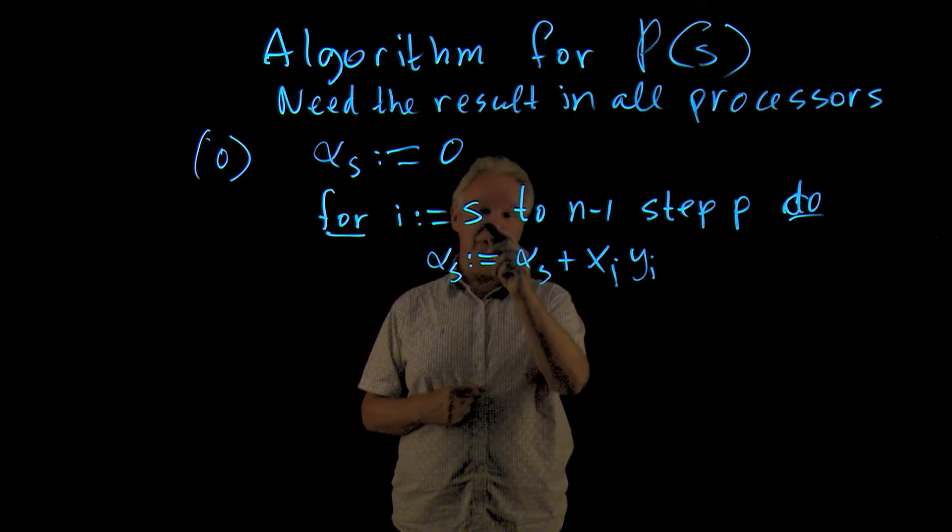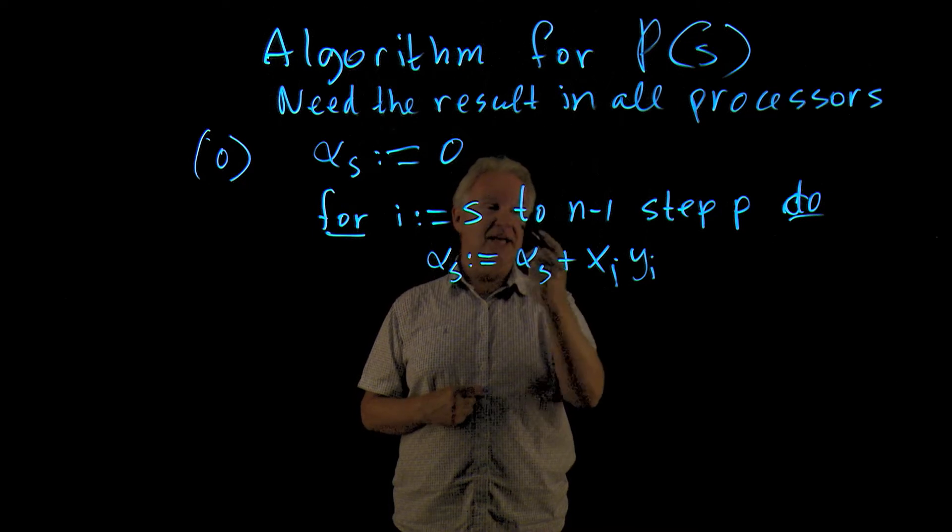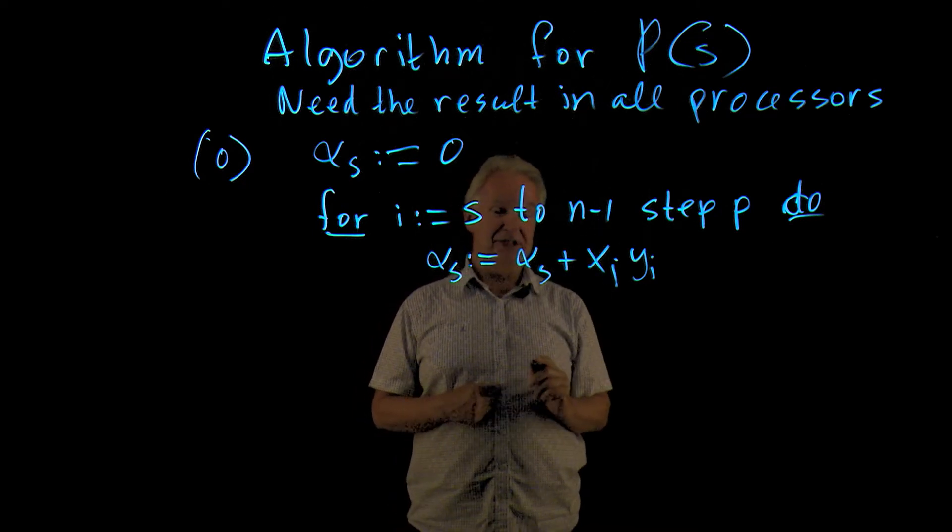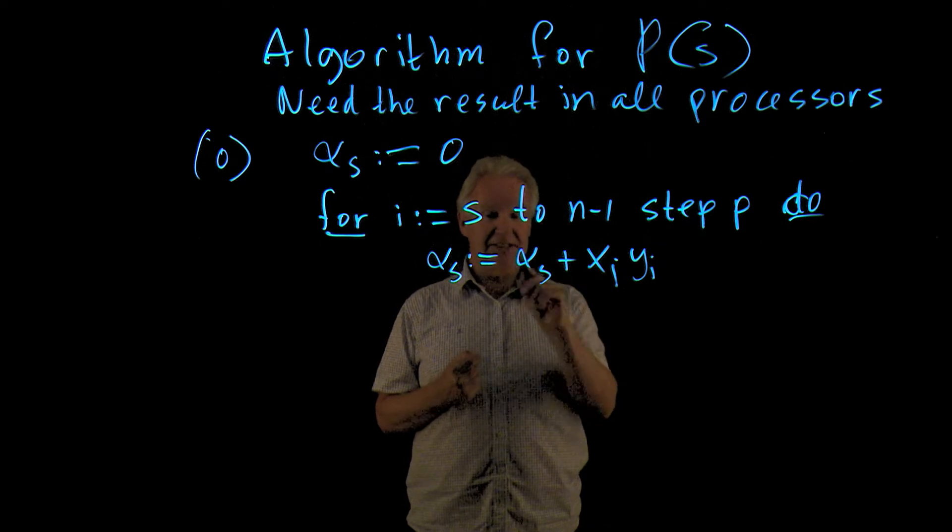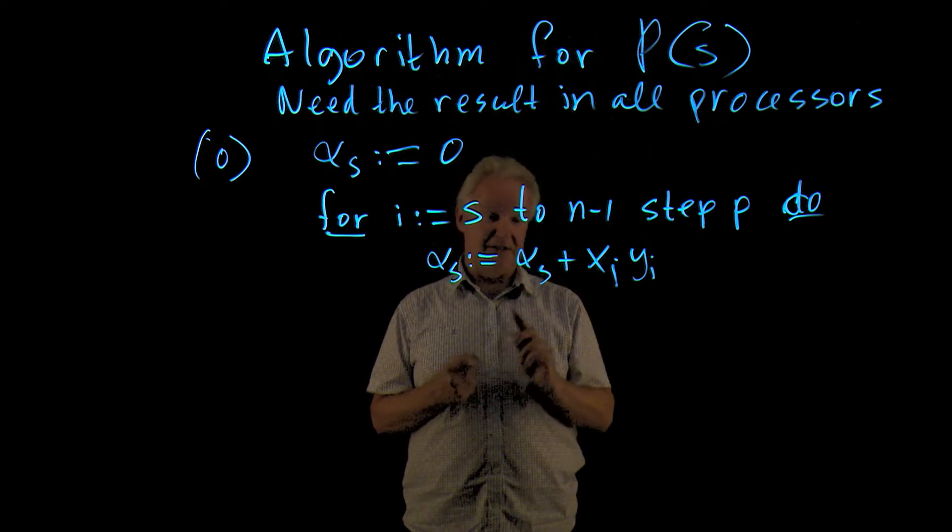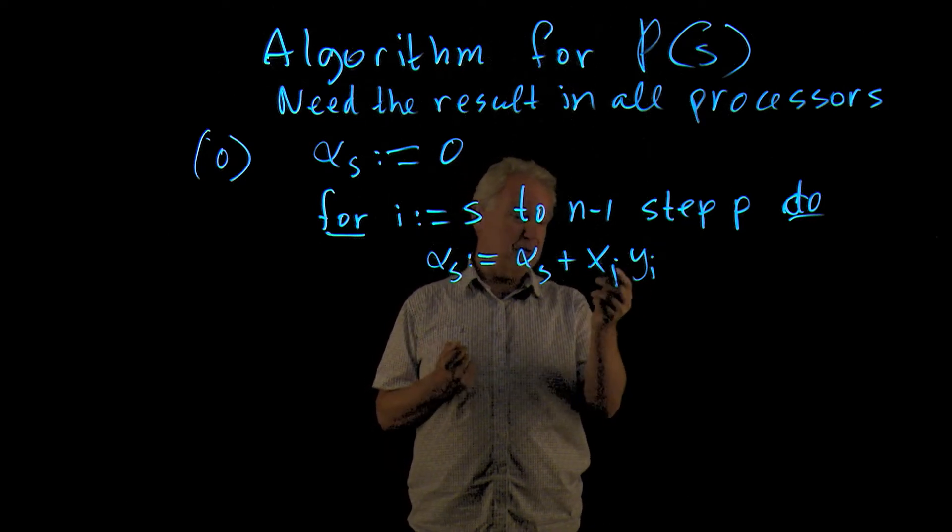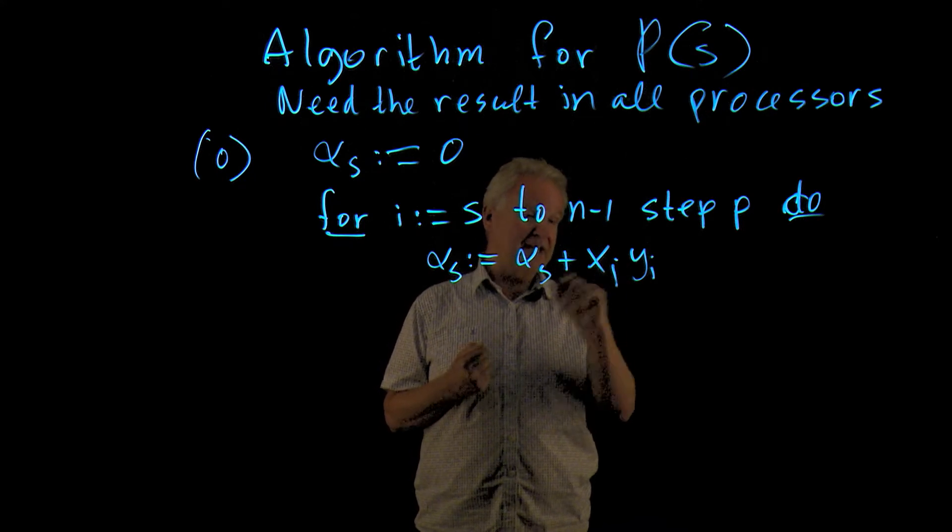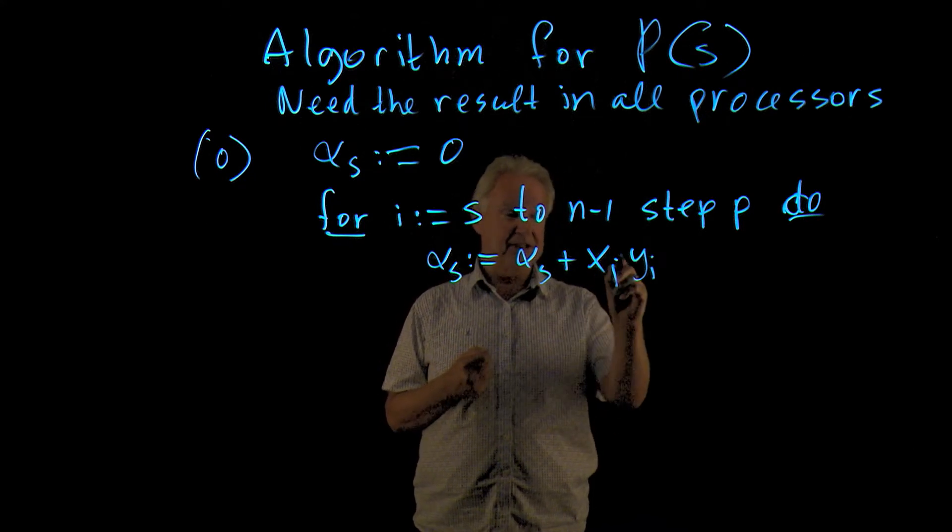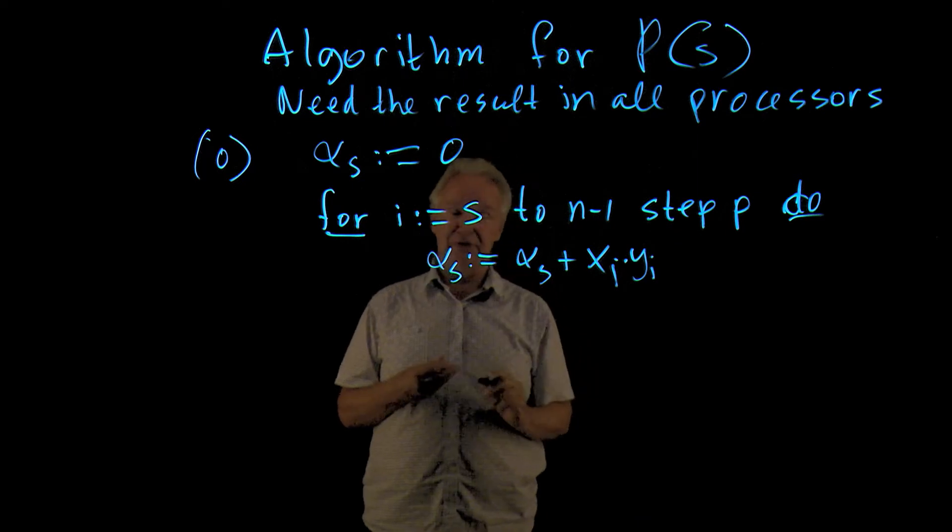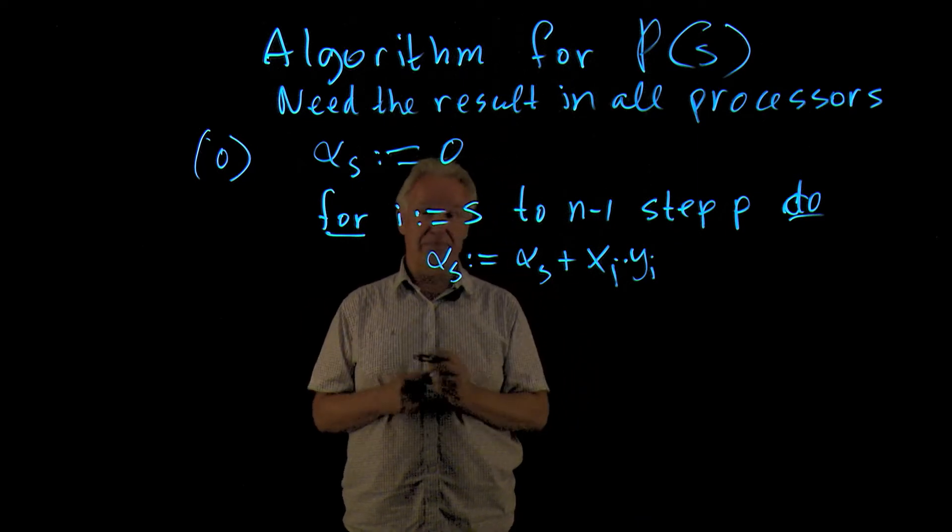And so what you see here is that processor S starts at S, then takes a step of P, so it gets to S plus P, S plus 2P, etc., until the end of the array. And by the cyclic distribution, this is exactly the local components xi and yi that are being multiplied and added to alpha S. So that's super step 0.